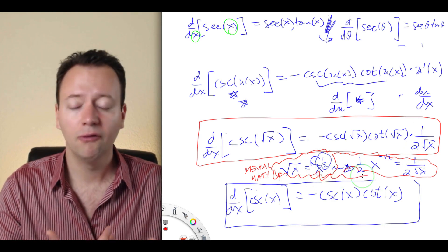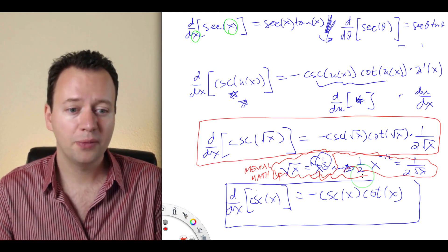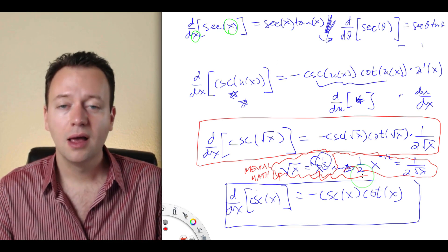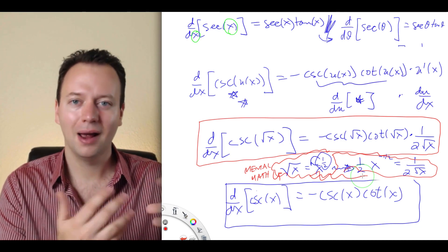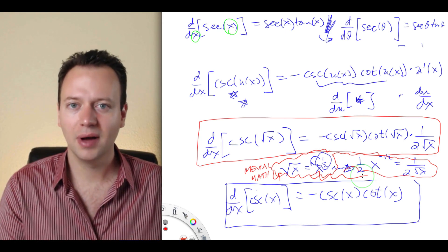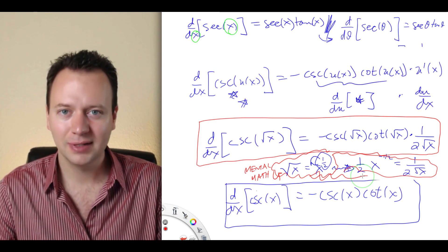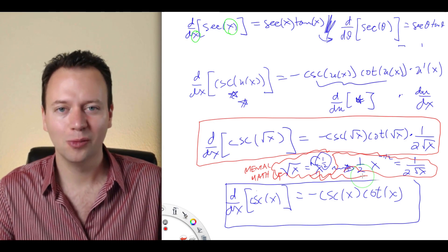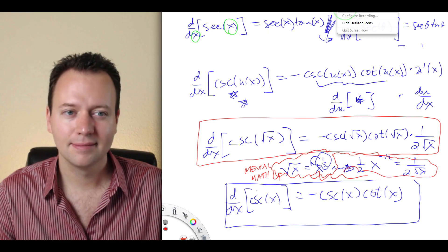As you practice and gain experience taking derivatives, you'll get comfortable doing those steps in your head, going directly from √x to 1 over 2√x. Feel free to write out the steps on paper as long as you need. That is the introduction to the derivatives of the secant and cosecant functions.